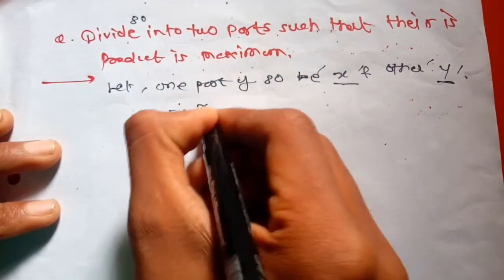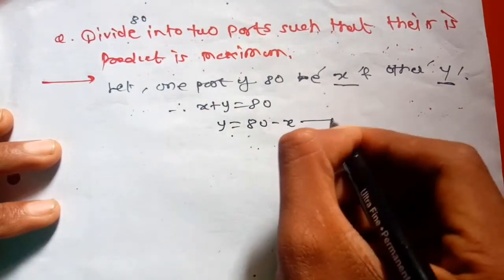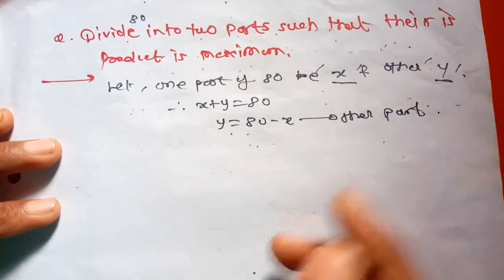So X plus Y is equal to 80. Therefore, the other part will be 80 minus X.